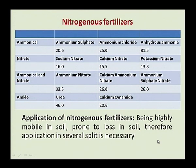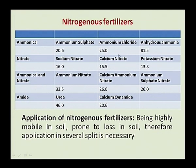Now we come to fertilizers. First is nitrogen fertilizer, because nitrogen is the main nutrient needed for plant growth. There are four types of nitrogen fertilizer: ammoniacal, nitrate, ammoniacal-nitrate, and amide. Under ammoniacal nitrogen fertilizers: ammonium sulfate has 20.6 percent nitrogen, ammonium chloride has 25 percent nitrogen, and anhydrous ammonia has around 82 percent nitrogen.